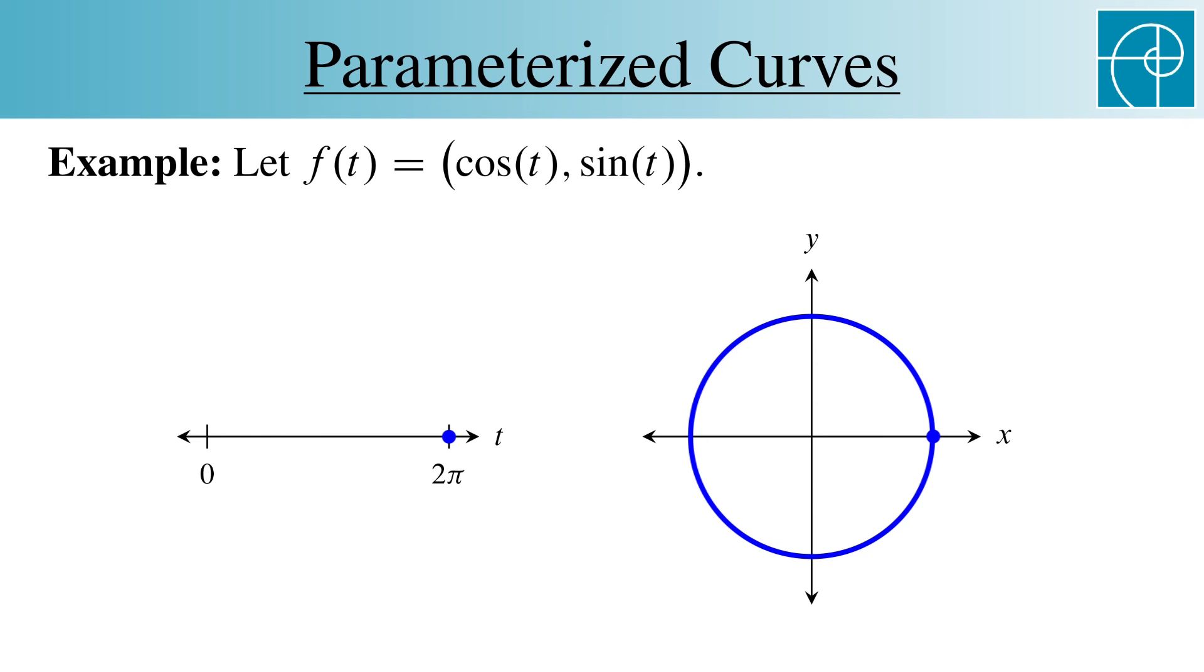Not only that, but we've given the circle a counterclockwise orientation. If we wanted to, we could change cosine to negative cosine, and thereby change the orientation to clockwise.